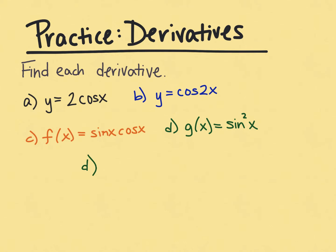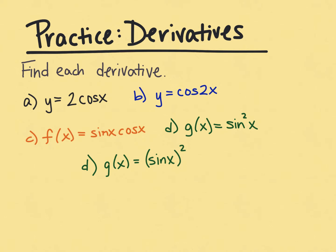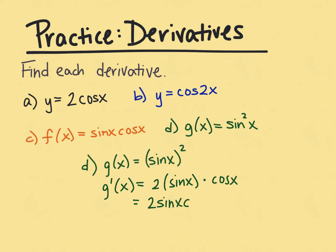In part d, sine squared is really the sine of x quantity squared — note this is NOT equal to the sine of x squared; those are different. To take the derivative, we use the power rule: bring the 2 out front, that something stays the same raised to one less power, then multiply by the derivative of the inside using the chain rule. The derivative of sine of x is cosine of x, so our derivative is 2 sine x cosine x.